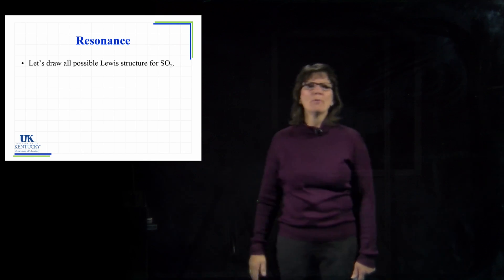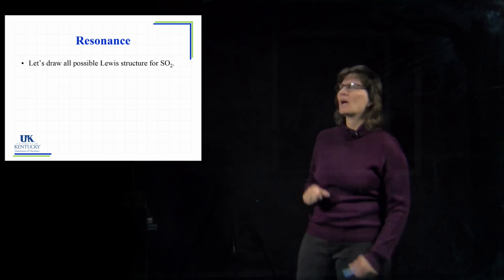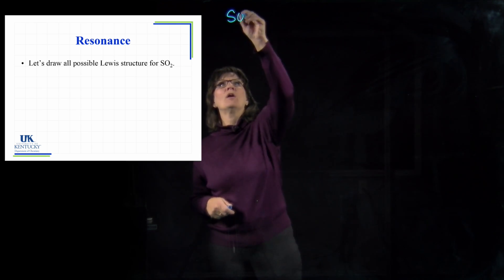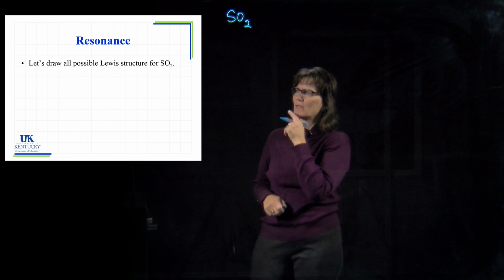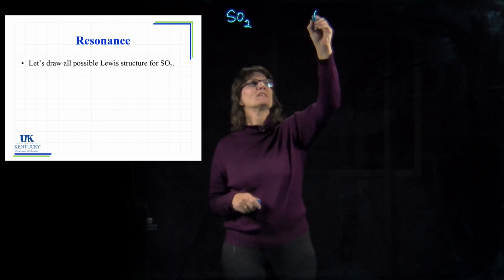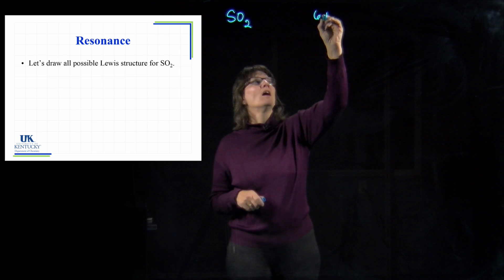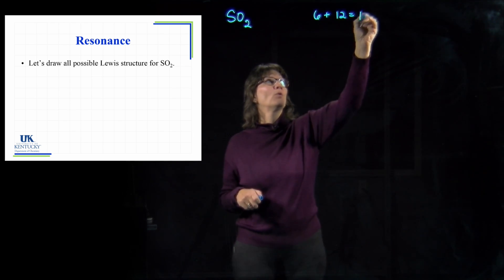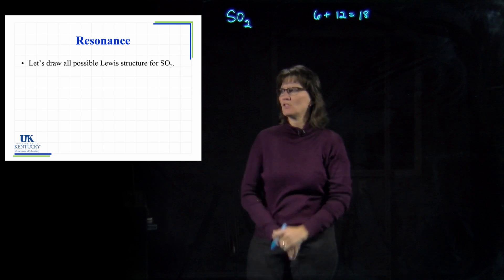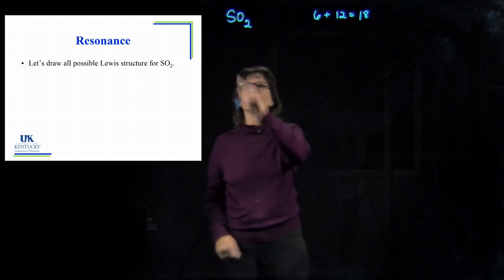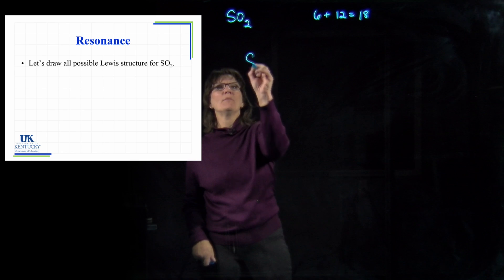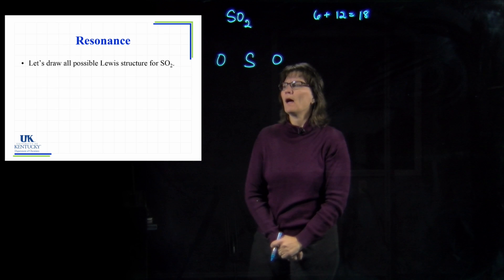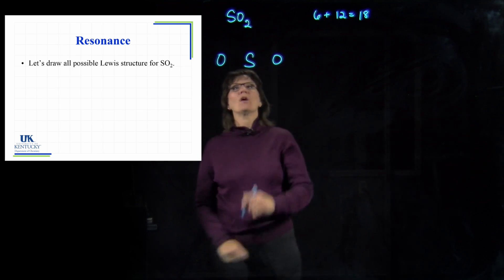Let's draw all the possible resonance structures for SO2. Sulfur has six valence electrons; we have two oxygens, they both have six. That's 12 total for the oxygens and 18 total for the molecule. For connectivity, sulfur is the least electronegative of the bunch, so we have sulfur in the center with an oxygen on each side. Now we start putting those electrons in.